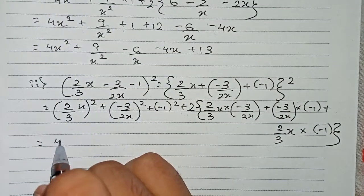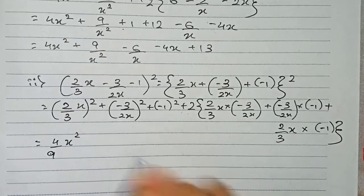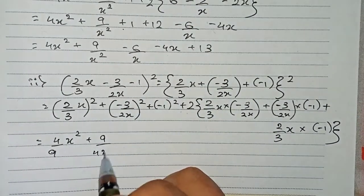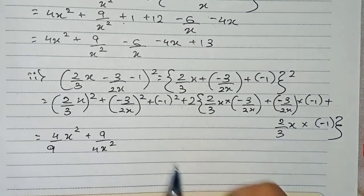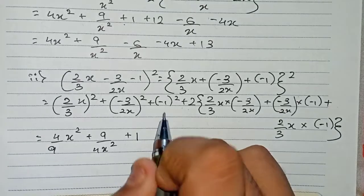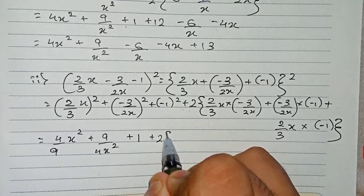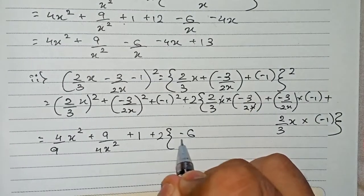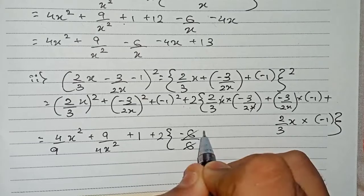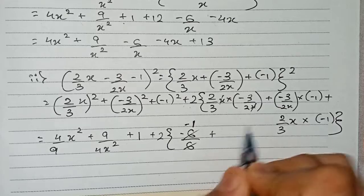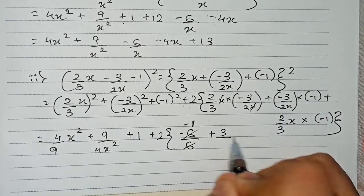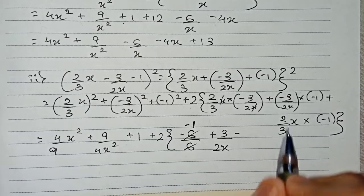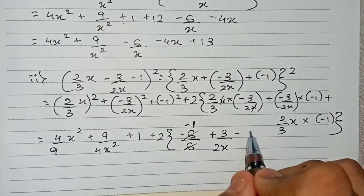Squaring: 2² = 4 and 3² = 9, so (2/3x)² = 4/9 x². Then (-3/2x)² = 9/4x², and (-1)² = +1. For the ab cross term, x cancels: 2 × (-3) = -6, divided by 3 × 2 = 6, giving -1. For bc, minus times minus gives plus 3/2x, and for ca it becomes minus 2/3x.